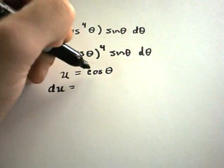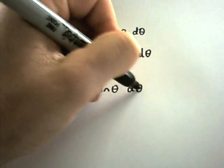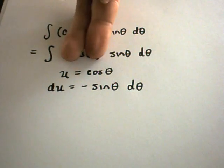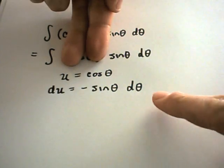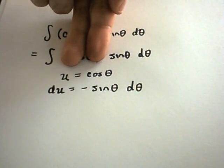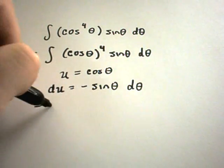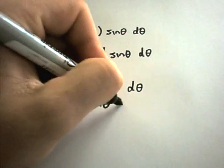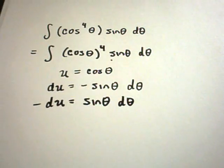So I'm going to let u equal cosine of theta. The derivative, or the differential, is going to be negative sine of theta d theta. And notice, okay, so I'm calling cosine of theta u, so that'll take care of my u to the fourth. And then I have a sine of theta d theta left over. The differential says I get negative sine theta d theta. Well, I can just multiply both sides by a negative and get negative du equals sine theta d theta. And that's now what I'll replace the sine theta d theta stuff with.